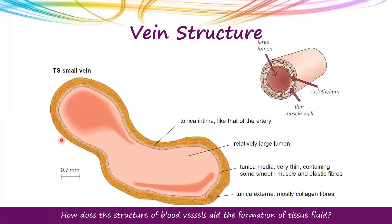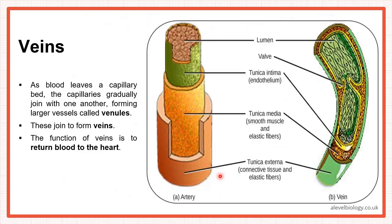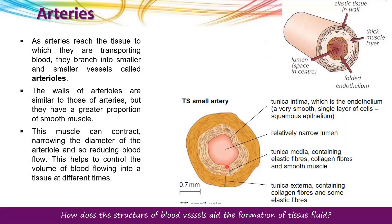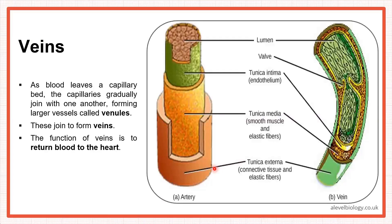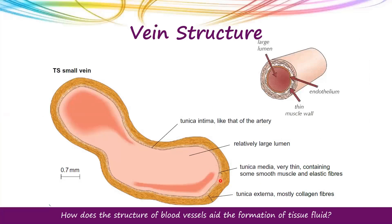Looking at a diagrammatic view of a vein, it is similar to an artery, but if you focus on the tunica media, it is very thin and contains a small number of smooth muscle and elastic tissues compared to the artery. The artery has a thicker tunica media, whereas the vein has a thinner tunica media. The tunica externa has many collagen fibres, and the lumen of the vein is quite wider compared to the artery.